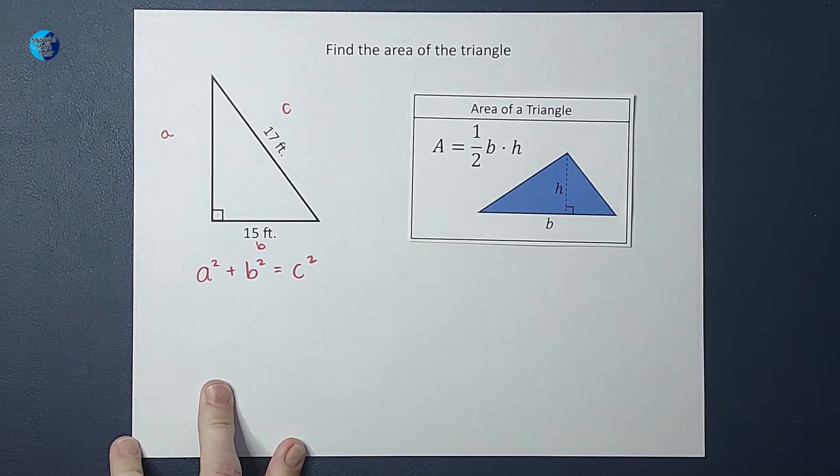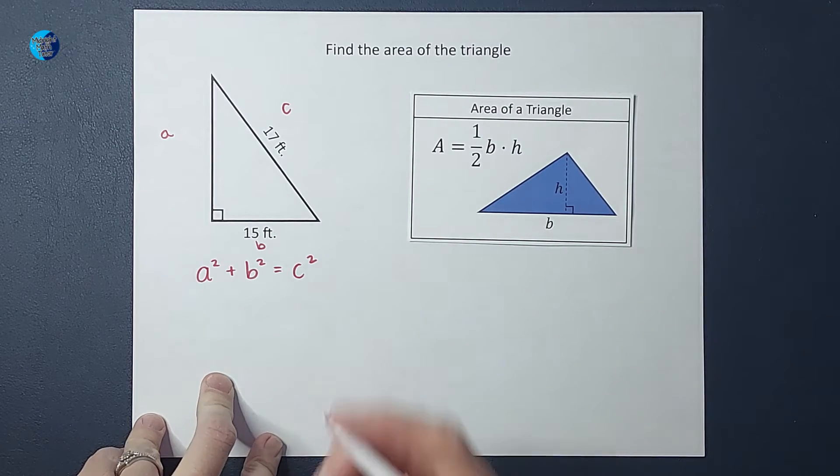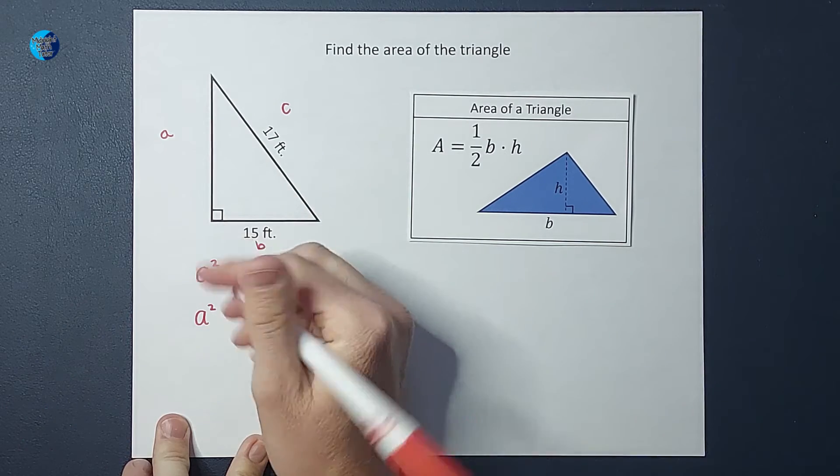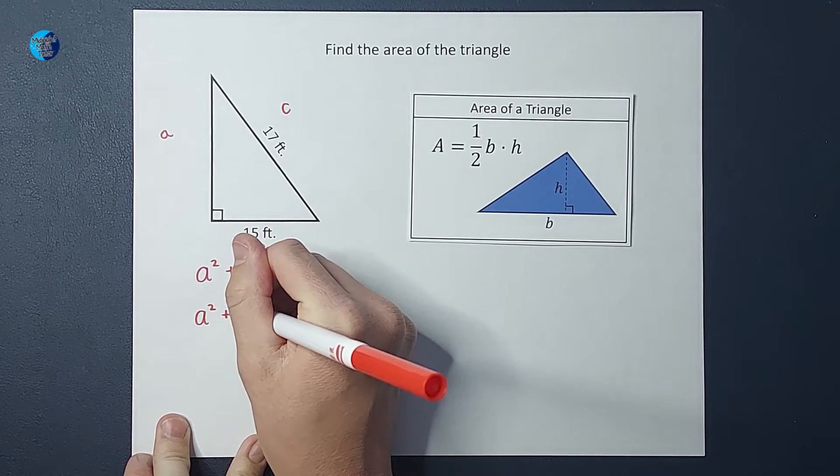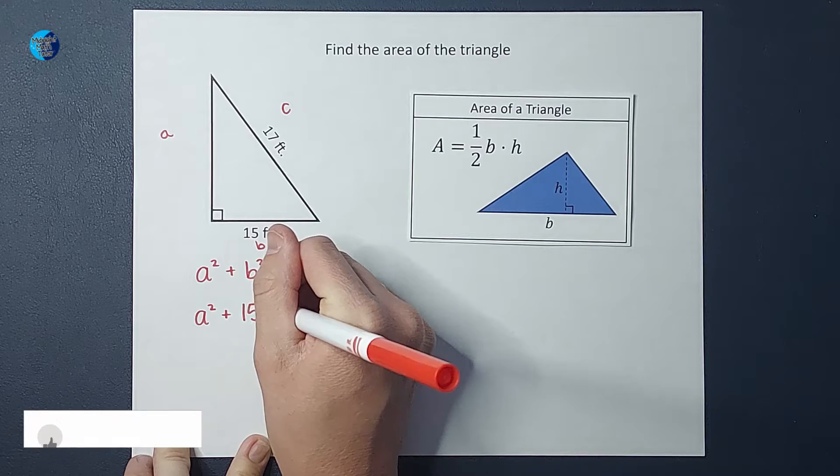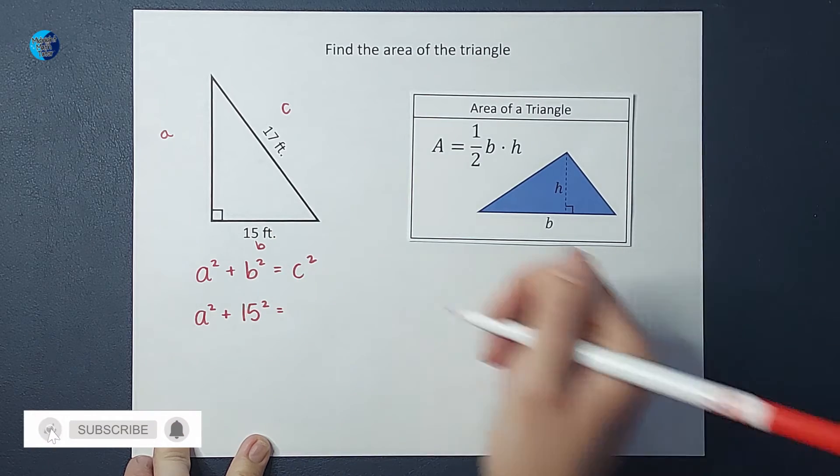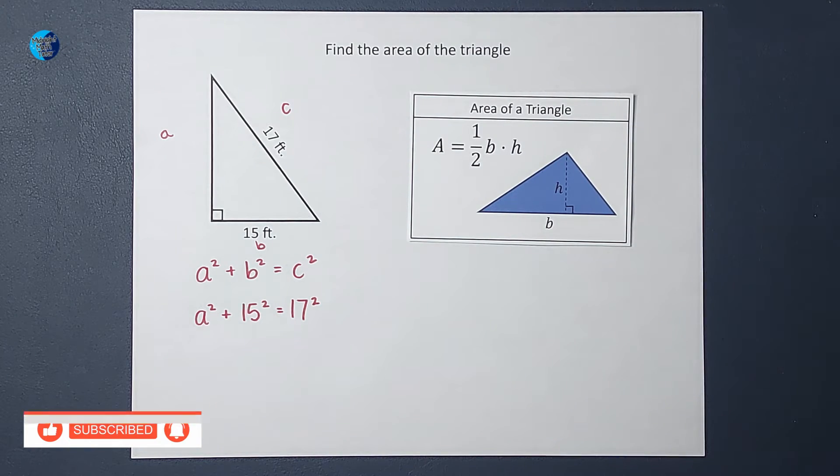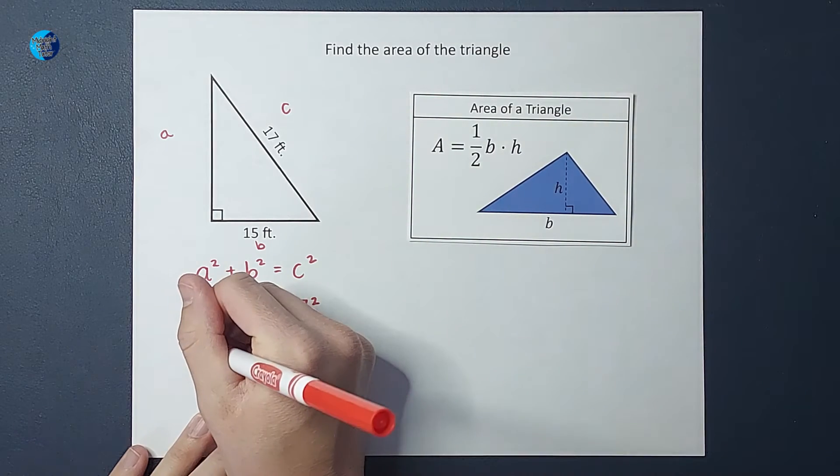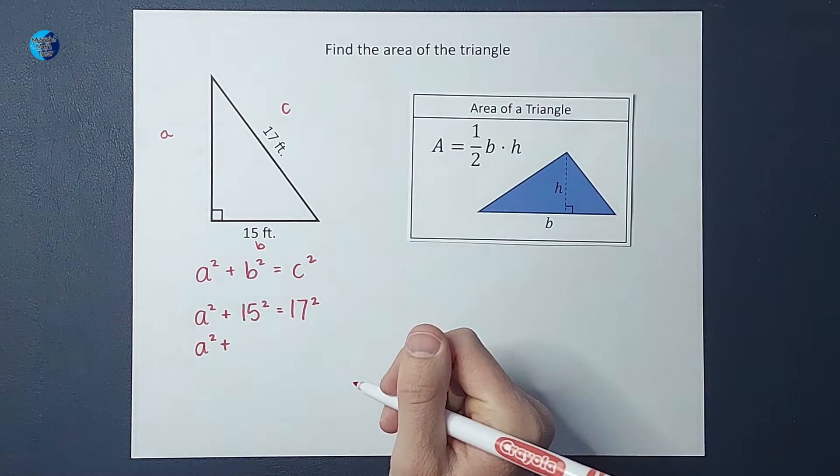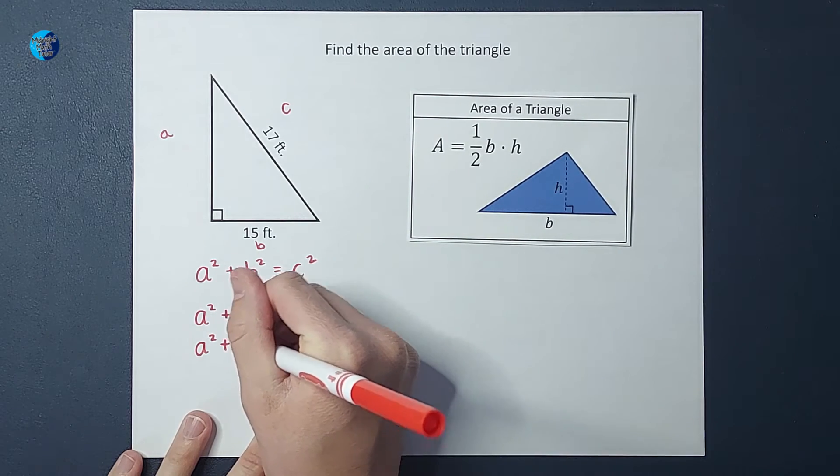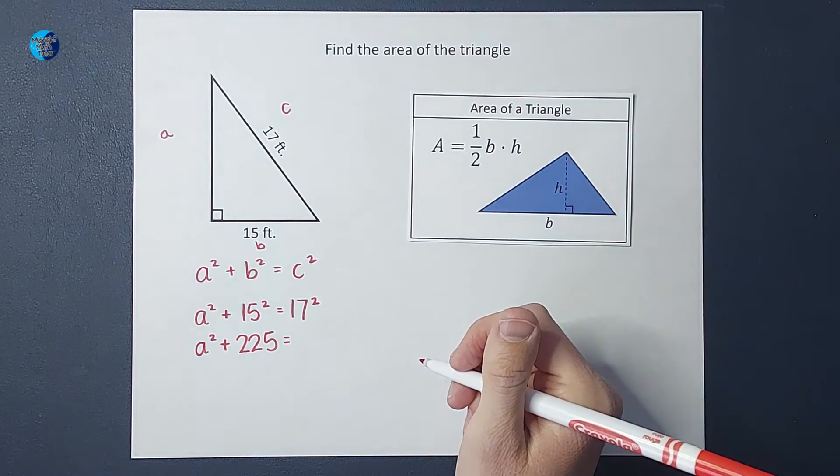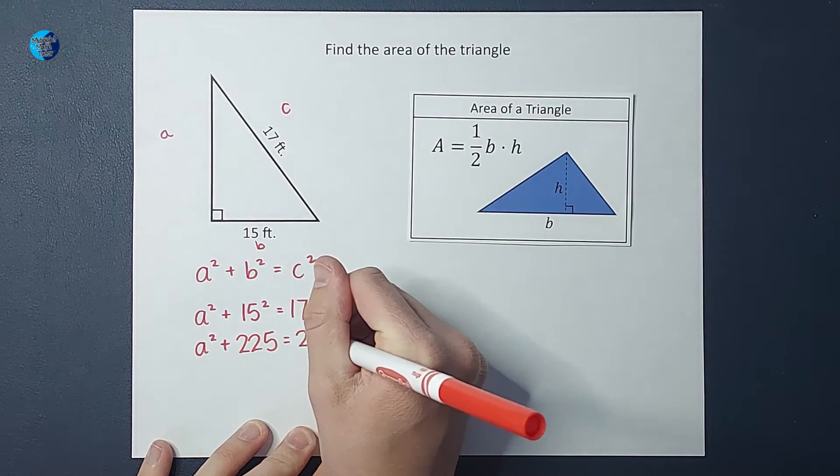So I can go ahead and fill these in to figure out what a is. So I'm going to have a squared, because that's what I don't know, plus b squared, so 15 squared, equals c squared, so 17 squared. Okay, now if I keep solving that down, I get a squared plus 15 squared gives me 225, equals 17 squared gives me 289.